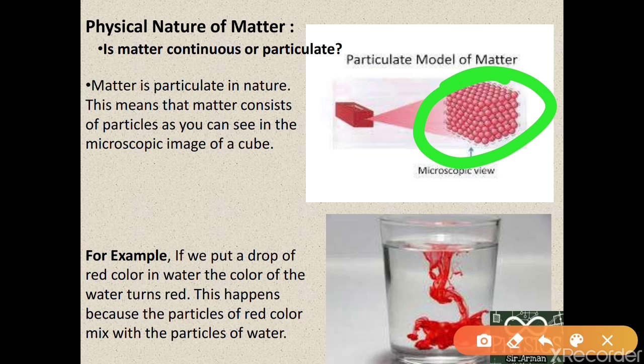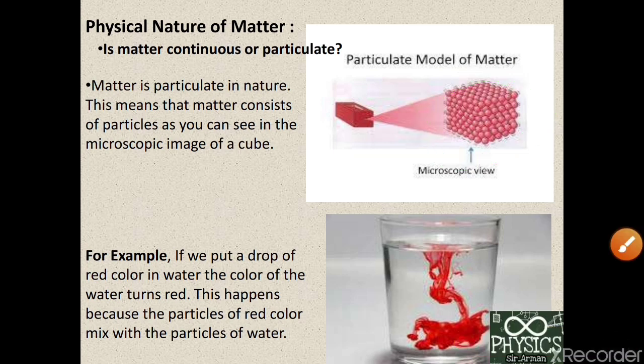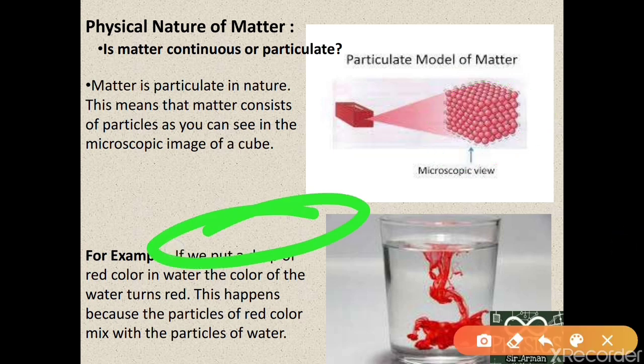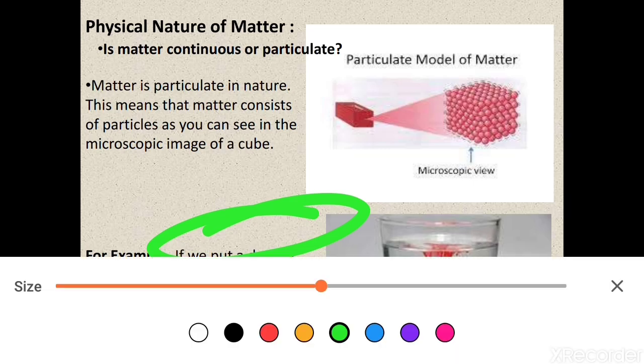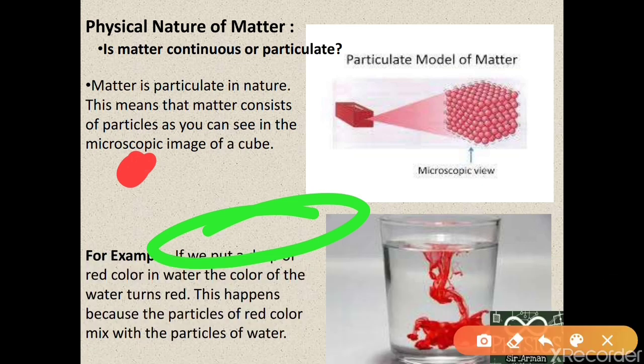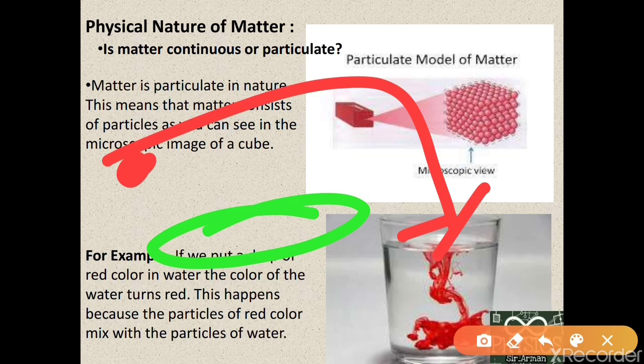Another example: if you put a drop of red color into water, the water becomes completely red. This happens because the red color spreads and divides into a large number of small particles. Hence we can conclude that matter is made up of very, very small particles.